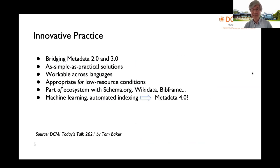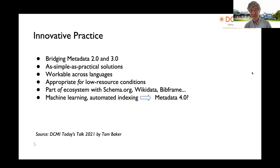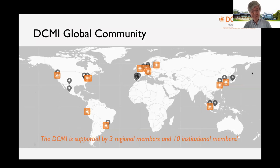Dublin Core has always been not just about the core elements but a frontier of innovative practices, bridging the gap from metadata 2.0 to 3.0 with simple, practical solutions, coupled across many languages and appropriate for low-resource conditions. We work very closely with schema.org, Wikidata, and DFRAMES. It's good for machine learning and automatic indexing, and hopefully will help move toward metadata 4.0.